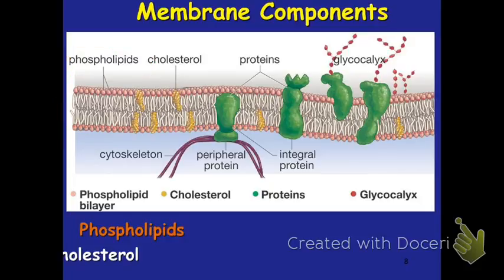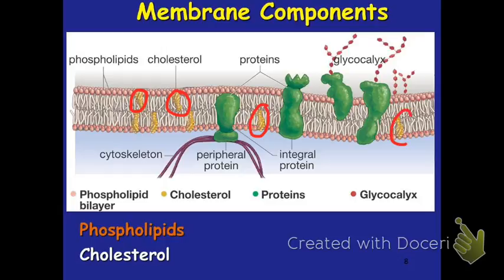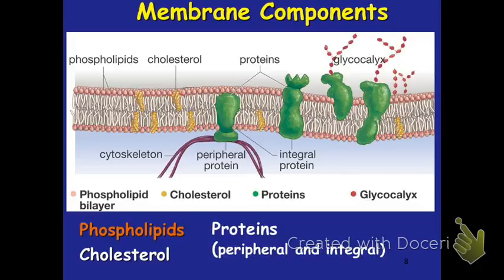Cholesterol plays an important role in making sure that we're able to keep our membrane fluid and flexible — the cholesterols are interspersed into our membrane. Next, we have proteins. Proteins are important in the membrane because they're going to help with transporting molecules through the membrane. We have peripheral proteins and integral proteins, and we'll talk about the differences between the two.